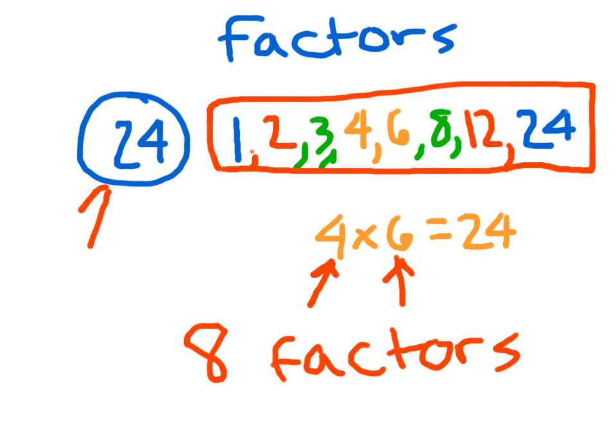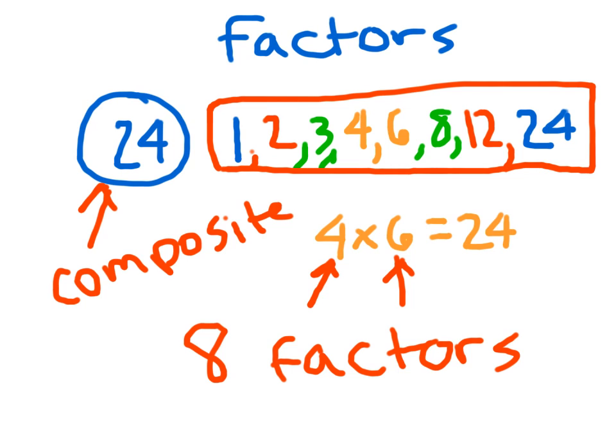24 is what we call a composite number. A composite number is a number that has more than 2 factors. I'll come back to that on the next screen when I give you some vocabulary to jot down.